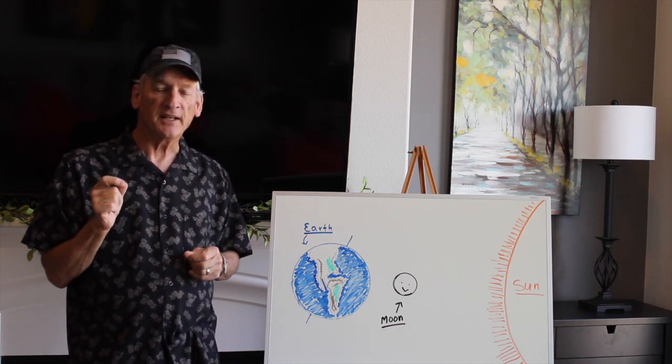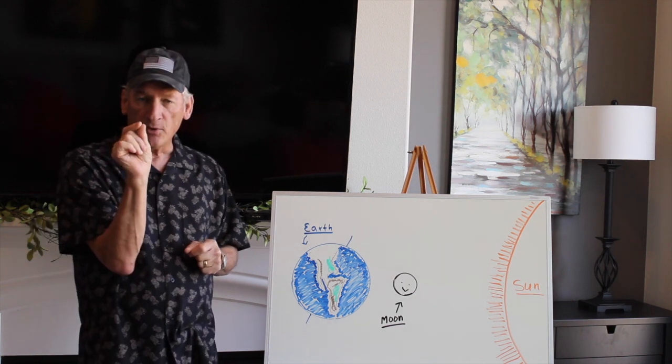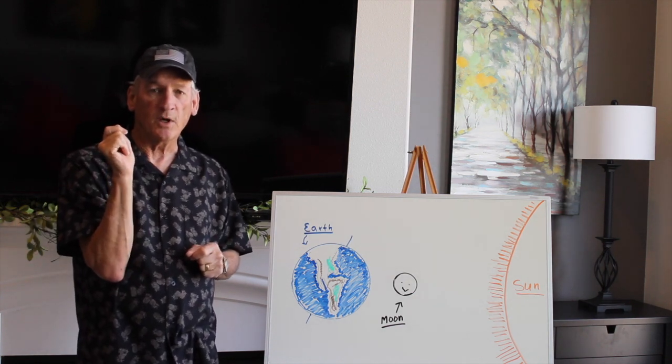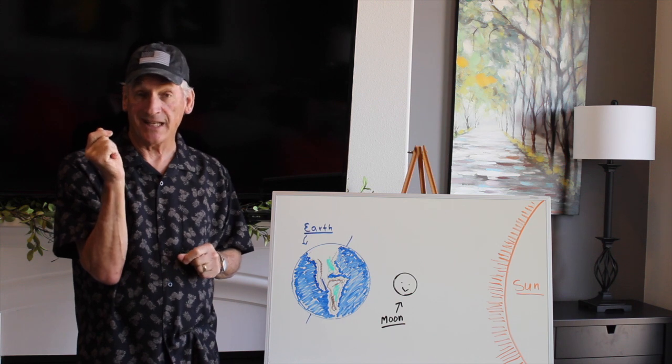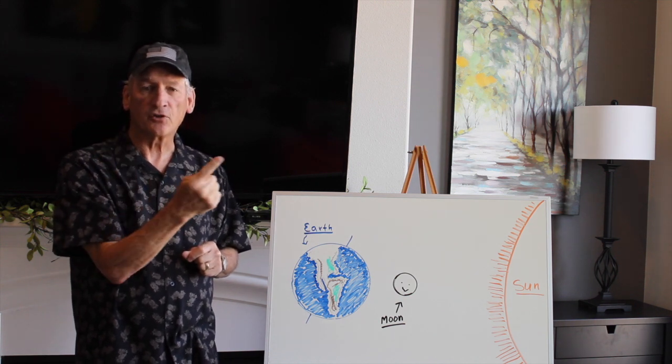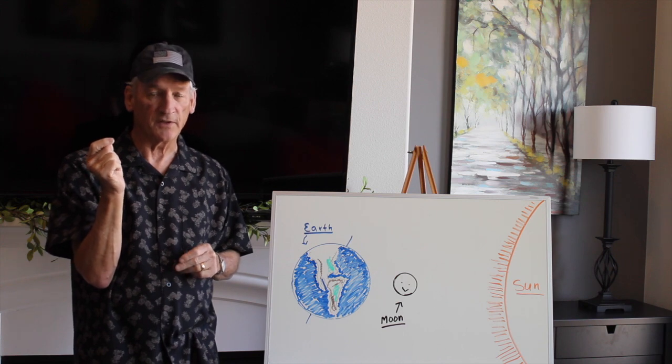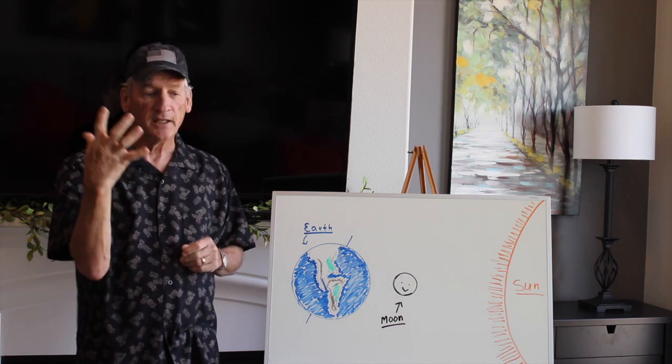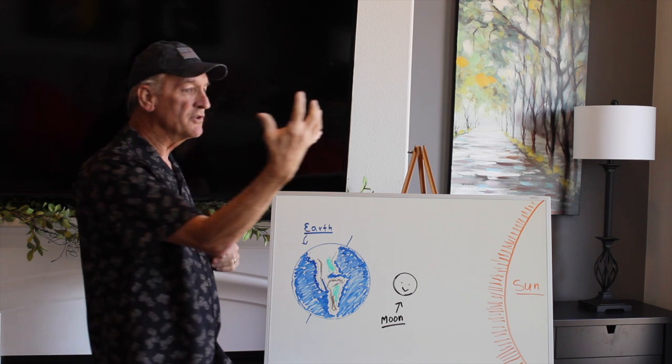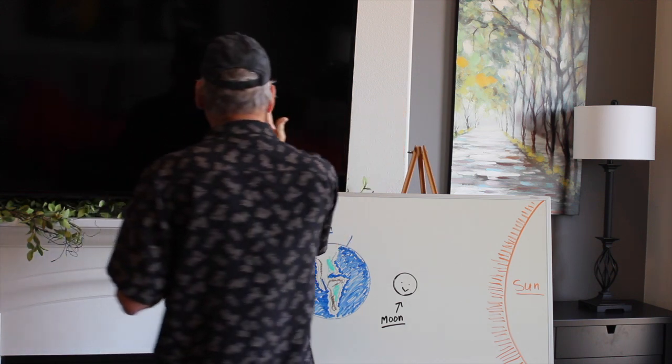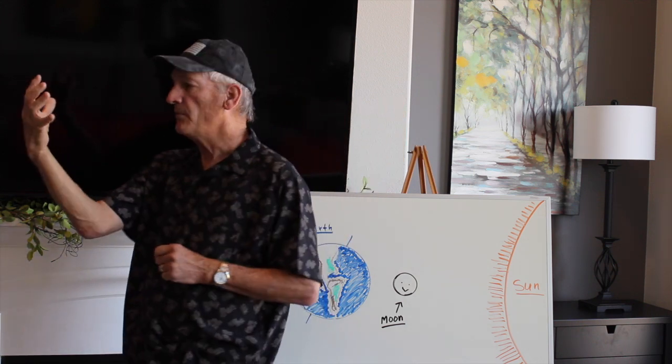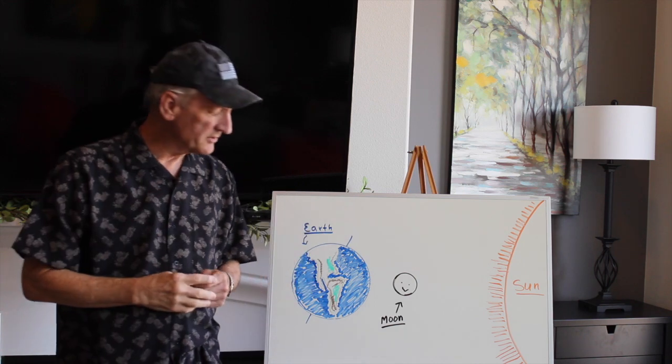Now the interesting thing about it is that the moon turns on its axis once every 27 days, roughly, and it also goes around earth once every 27 days, roughly. The result of that is that all we ever see is the front of the moon. It goes like that around us.